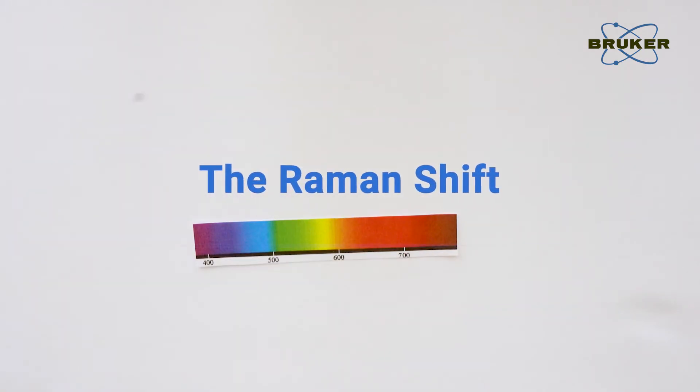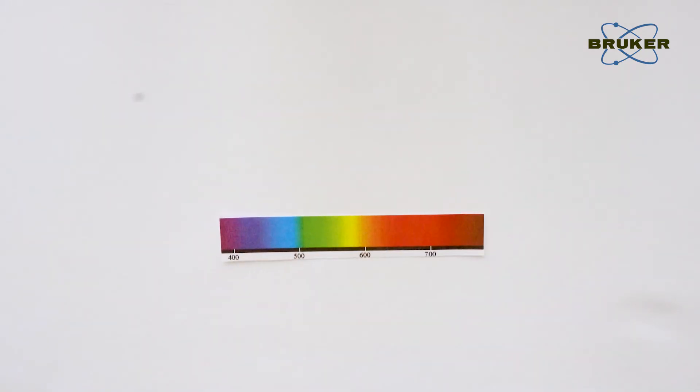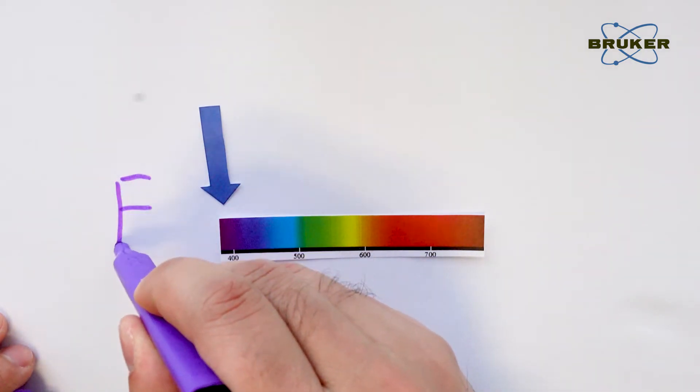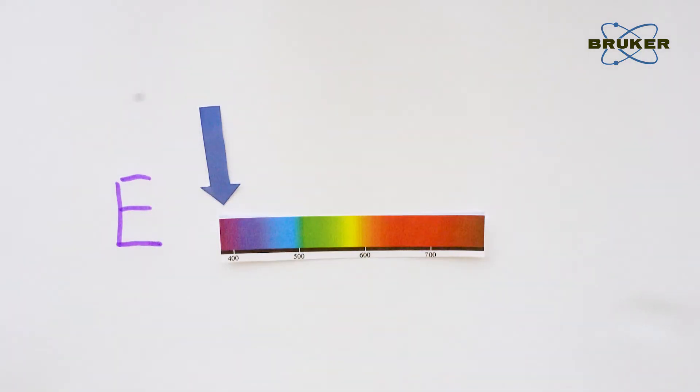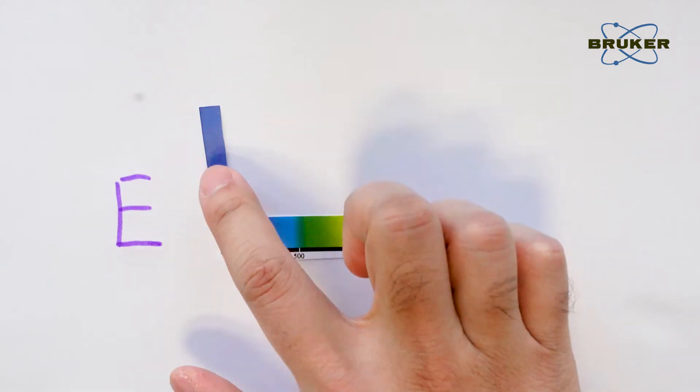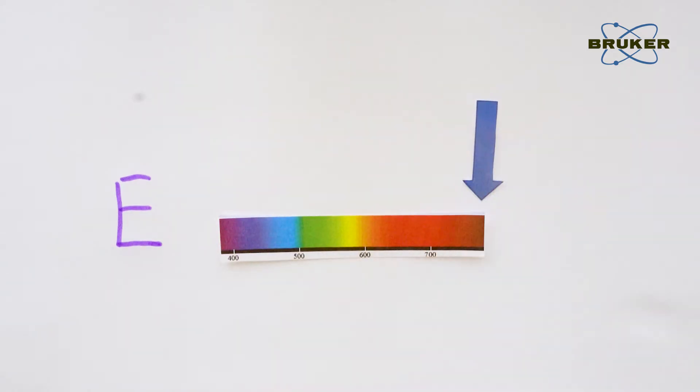Last time I explained the scattering of light and how it depends on wavelength. Now you also must know that the wavelength itself tells you about a photon's energy. A short wavelength means high energy and longer wavelengths of course lower energy.